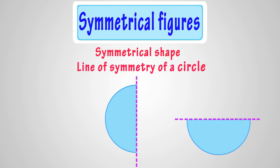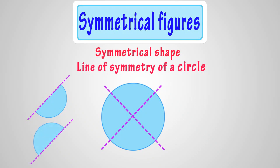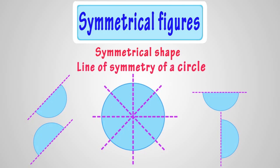Now, let's see how many lines of symmetry you can make in a circle. Try folding the circle halfway — we can fold it here, and we can fold it here too. So, we can make any number of lines of symmetry in a circle, as all the lines that pass through the center of the circle are lines of symmetry.